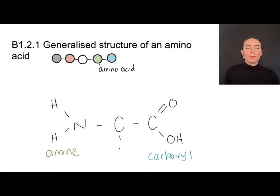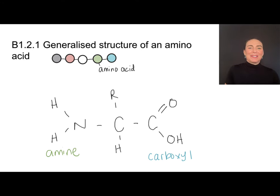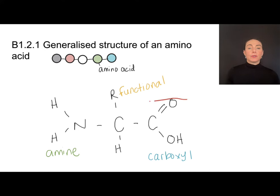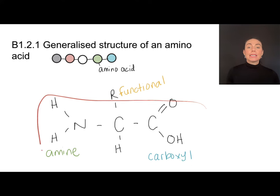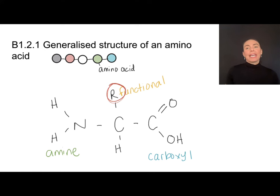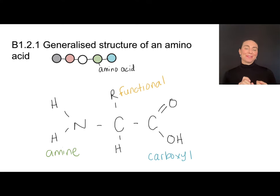Attached to the central carbon atom, we have a hydrogen atom and then what we call a functional group, labeled R. There is no chemical element that starts with R, so that's why we use this notation. This is my functional group. All of the 20 different amino acids are going to be identical in this part — it will be the same for all of them. What makes each of the 20 different amino acids unique is a different R group. Some of them will be very simple, some very complex — we'll take a look at those later.